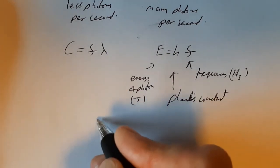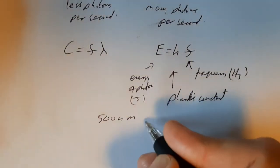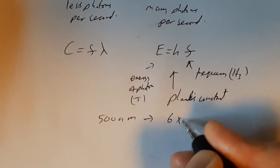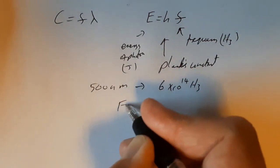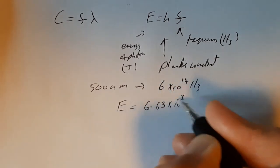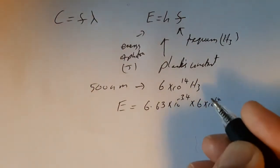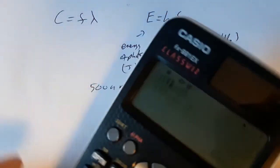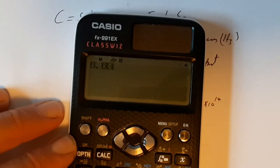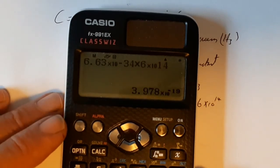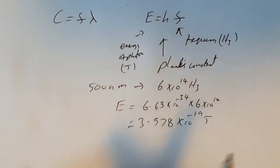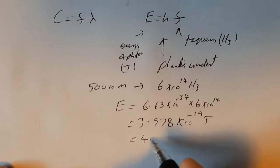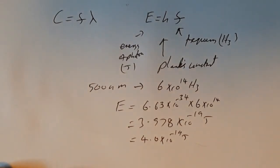Let's do what we did last time and start with light of 500 nanometres. From the last video, that has a frequency of 6 × 10¹⁴ Hz. So how much energy does a photon of this wavelength have? We calculate E = 6.63 × 10⁻³⁴ × 6 × 10¹⁴, and using the calculator we get 3.978 × 10⁻¹⁹ joules. An individual photon has only a really tiny amount of energy. We'll round that accordingly — we'll talk more about significant figures on another occasion.